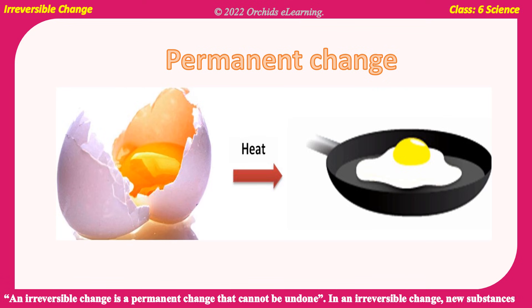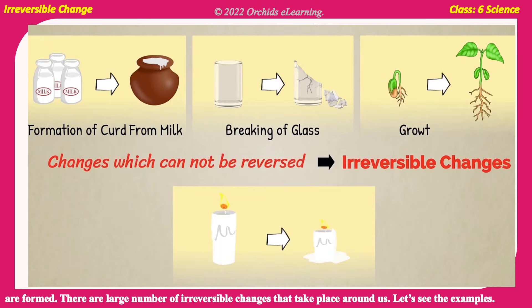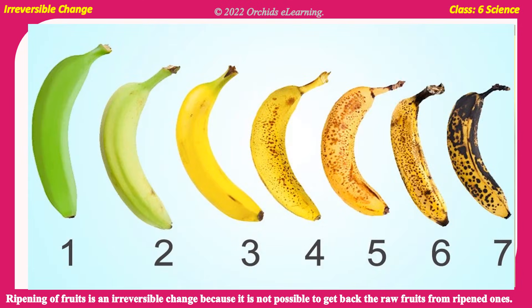Irreversible change: An irreversible change is a permanent change that cannot be undone. In an irreversible change, new substances are formed. There are a large number of irreversible changes that take place around us. For example, ripening of fruits is an irreversible change because it is not possible to get back the raw fruit from ripened ones.